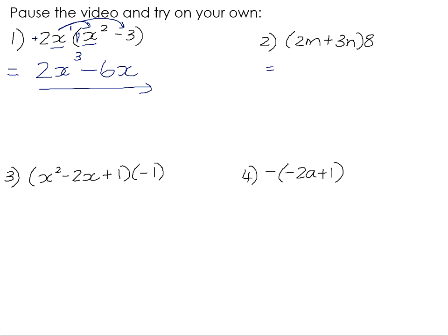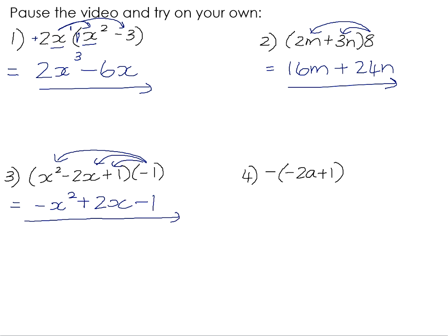Number 2, we are distributing the 8 into the bracket. 8 times 2m is 16m, and 8 times 3m is 24m. Number 3, we are distributing a negative 1 into the bracket. Negative 1 times x squared is negative x squared. Negative 1 times negative 2x is positive 2x, and negative 1 times positive 1 is negative 1. So in effect, all we are doing is changing the signs of the operations that come in front of each term. Positive x squared becomes negative, negative becomes positive, and the positive becomes a negative.